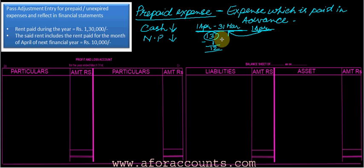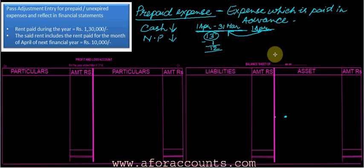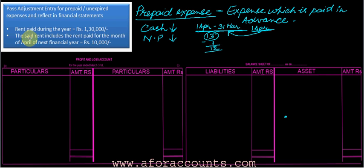Then only it will show a true and fair picture of your business. The prepaid expense will become an asset for you, so you have to record it in the assets column, because in next April you need not pay it again. Now let's start the entry. The question is: rent paid during the year is equal to one lakh thirty thousand.